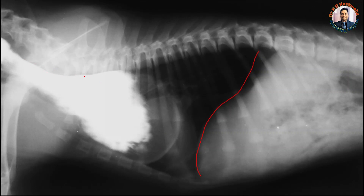But if you see here, this is a balloon-like structure. This balloon-like structure is nothing but the esophagus. This esophagus is dilated cranial to the heart. The radiopaque structure you see is barium sulfate, which we fed to the dog for contrast radiography, so that we can confirm that this swelling is the esophagus.